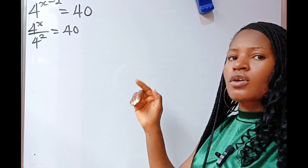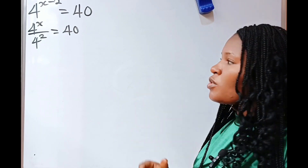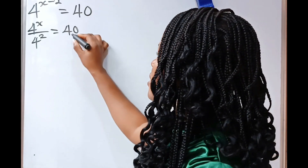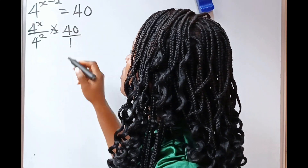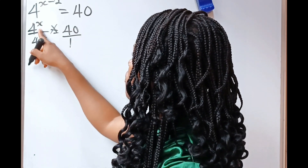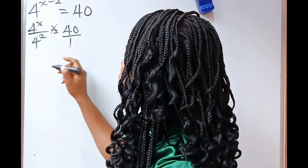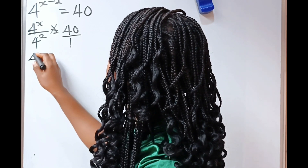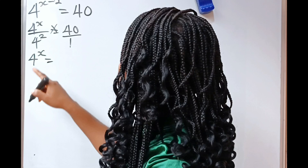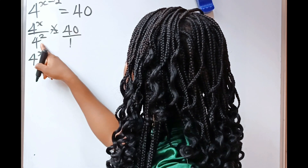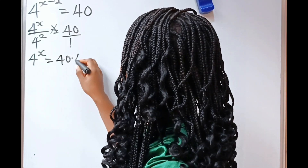Now, if we cross multiply — this is the same as 40 divided by 1 — so by cross multiplication, 4 to the power of x multiplied by 1 will give us 4 to the power of x is equal to 40 multiplied by 4 squared.